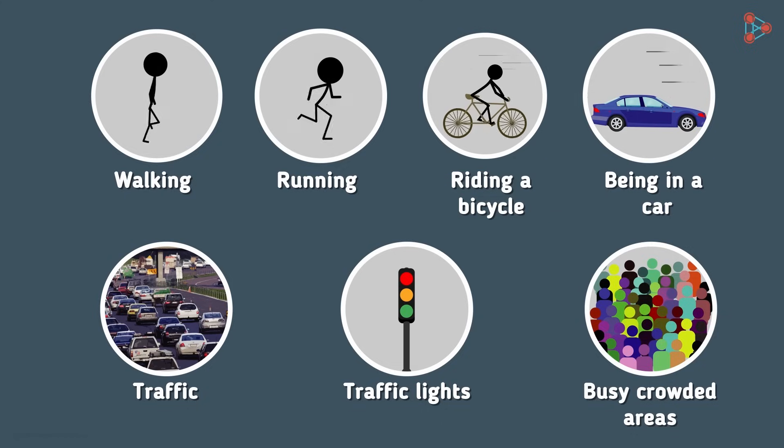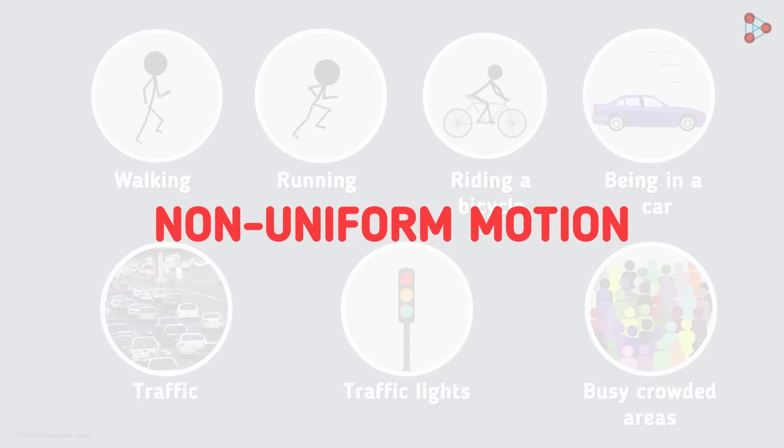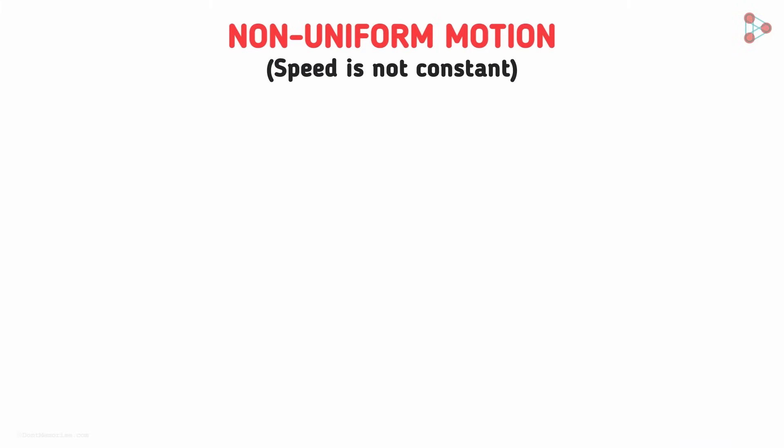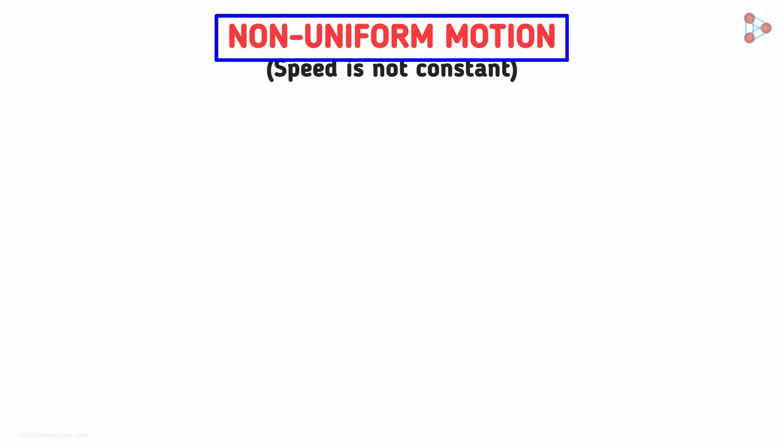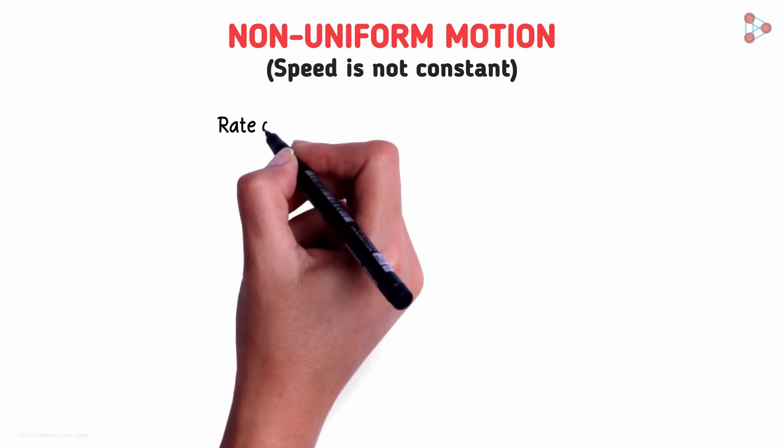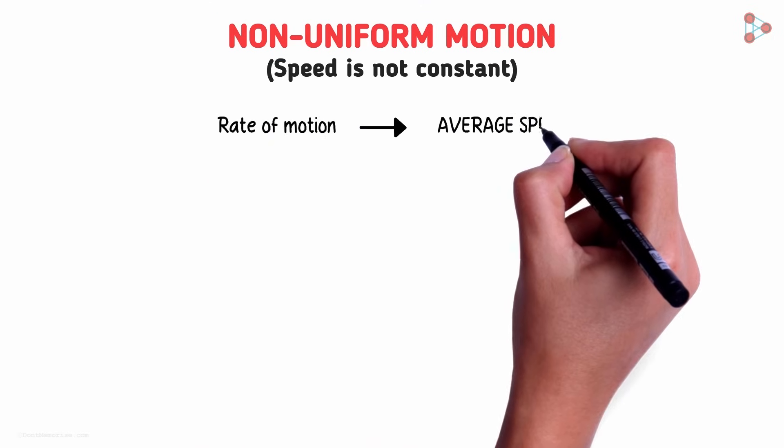Such cases are examples of non-uniform motion. The speed of the object is not constant. So hang on, can we calculate speed for non-uniform motion? As the motion is not uniform, it will have different speeds at different points in time. When it comes to non-uniform motion, we refer to the rate of motion in terms of average speed. Yes that's right, average speed.